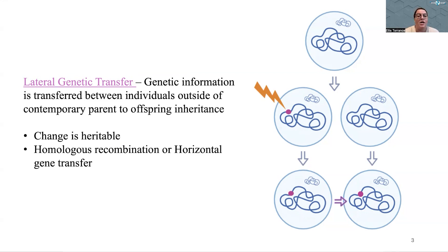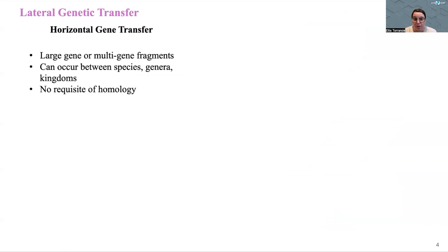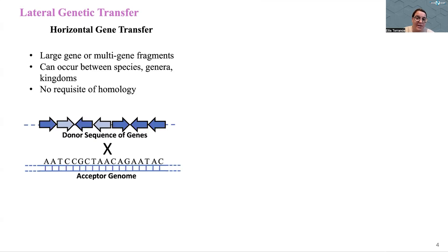Lateral genetic transfer is generally typified into either homologous recombination or horizontal gene transfer. Horizontal gene transfer is what most of us are probably more familiar with. These are transfers of large gene or multi-gene fragments that can really occur without a lot of boundary between species, genera, phyla, kingdoms even, because they don't have this requisite of homology or sameness in the DNA sequences being exchanged.